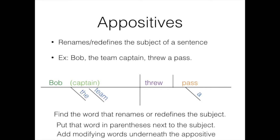We put that word in parentheses next to the subject to indicate it's an appositive. We then diagram any words that modify it, in this case the words the and team, like normal, but they come down from the appositive rather than the subject. Appositives aren't really tricky as long as you find the word that's renaming or redefining the subject first.